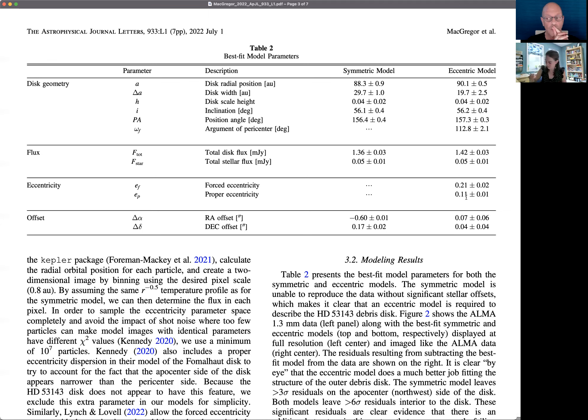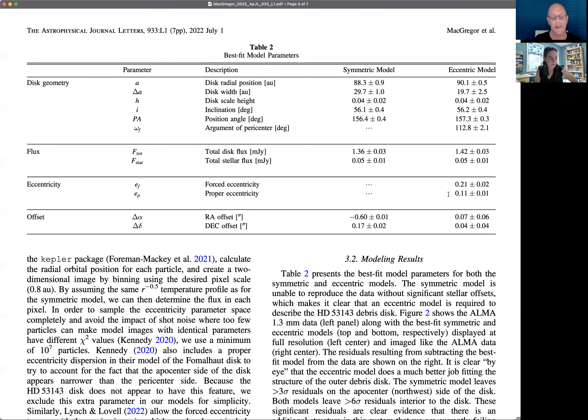If we scroll back up to table two, that gives you the actual numbers that come out of this. The left column is the symmetric model, and the right column is the eccentric model with the best fits. The belt is at like 90 AU - our Kuiper belt is at about 40 AU, so this is much further out. It has a width of something like 20 AU. We fit for a scale height, which is basically saying how flat is your disk - does it have vertical thickness? It pretty much doesn't at all - it wants to fit to something very, very flat. We get the geometry back: inclination, position angle, and the argument of pericenter. We get back a flux for the disk and star, then we fit these eccentricities. Forced eccentricity is 0.2 - that's pretty extreme. That's the most eccentric we've seen a disk. The previous record holder was Fomalhaut at something like 0.1. This is twice that.